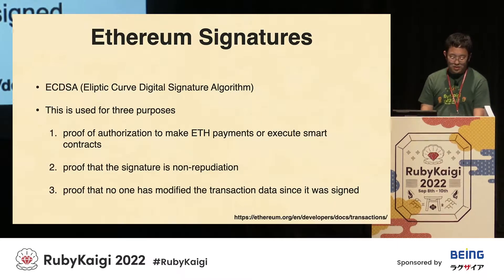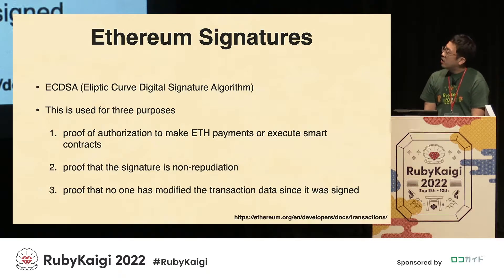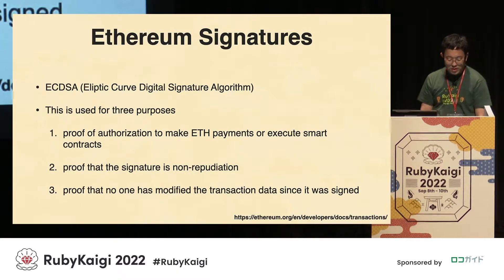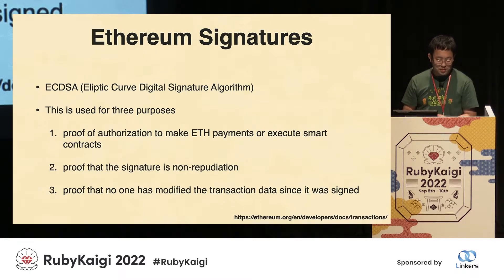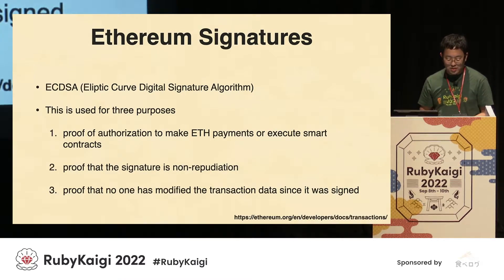Next, let's take a look at Ethereum signatures. The signature algorithm called ECDSA is used here. This is used for three purposes: one, proof of authorization to make each payment or execute smart contracts; two, proof that the signature is non-repudiation; three, proof that no one has modified the transaction data since it was signed.